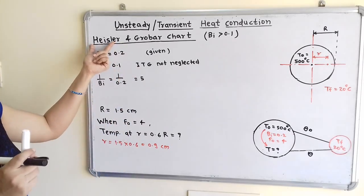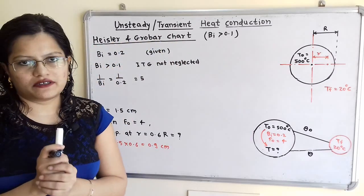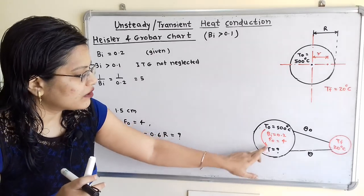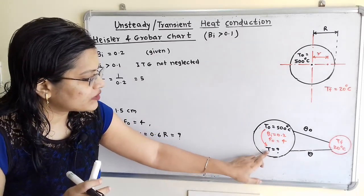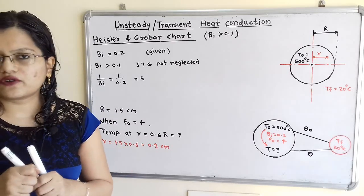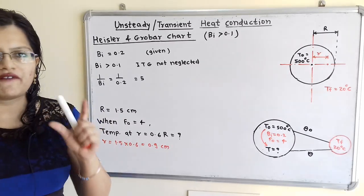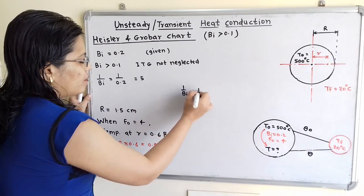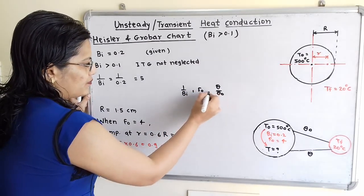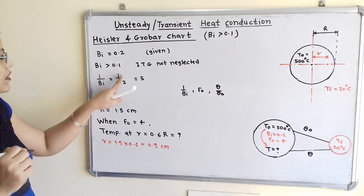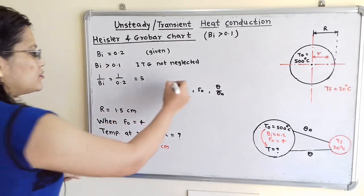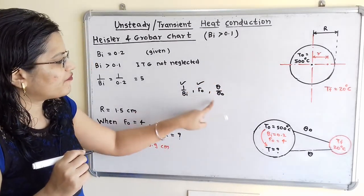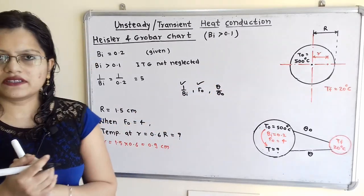We have to refer to the Heisler and Grover chart to find the value of T. In the Heisler and Grover chart, there is a graph between 1/Bi, Fourier number Fo, and θ/θ₀. Now, 1/Bi = 1/0.2 = 5, and the Fourier number is 4. From these two values we can find θ/θ₀.